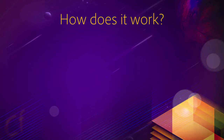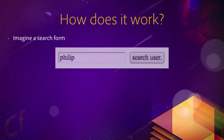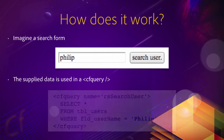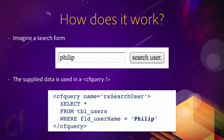This is how it works. First, imagine a search form that is used to search for users. You use the data submitted by the form to create a query that you send to the database. In this case, you select everything from the table users where the username is Philip, and Philip is the data that was submitted by the form.